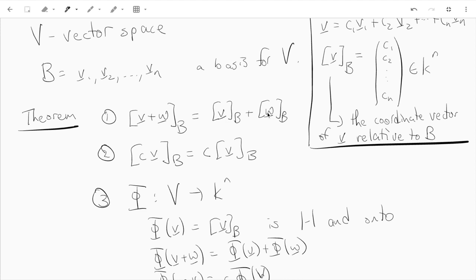You can add the two vectors and then take their coordinates, or take the coordinates then add and you get the same thing. Similarly with scalar multiplication: if you take the vector, multiply by a scalar, then take the coordinates, that's the same as taking the coordinates then multiplying by the scalar.